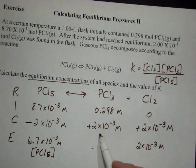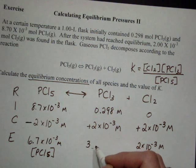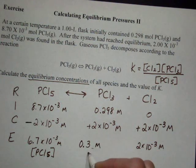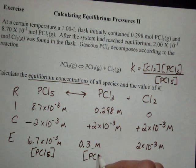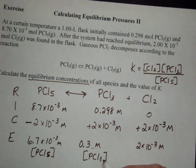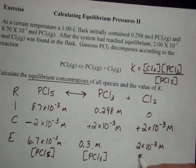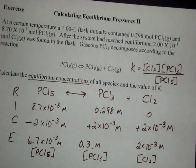Here I add, and I end up with 0.3 molar concentration of PCl3. And, as was given to me in the problem, 2 times 10 to the negative 3 molar concentration of Cl2.